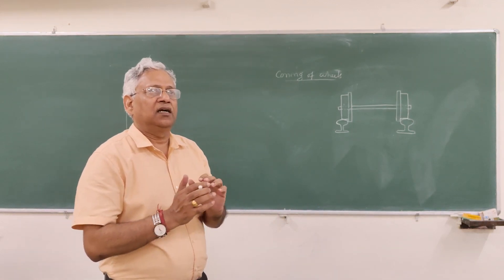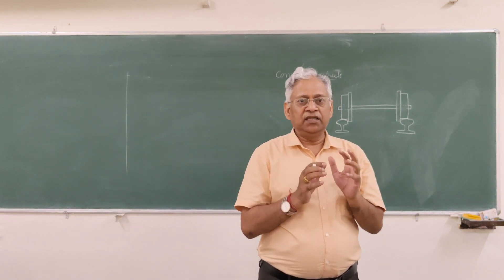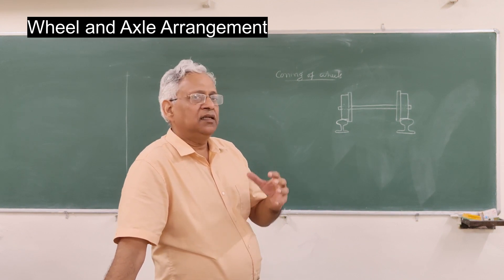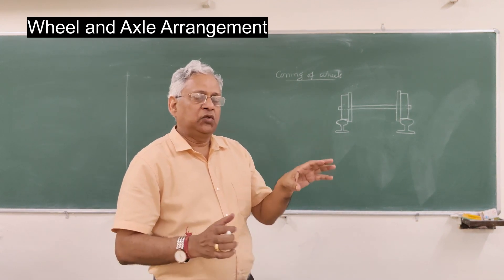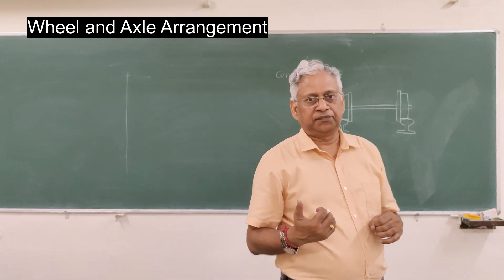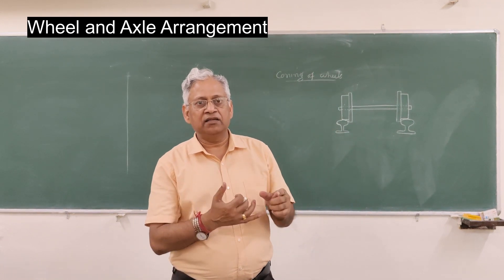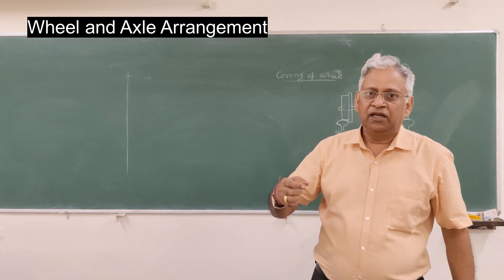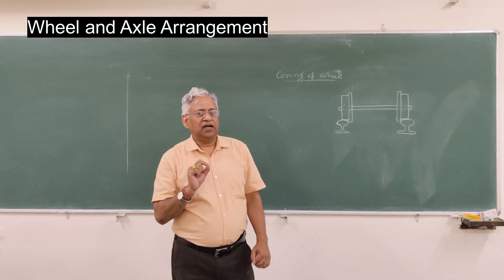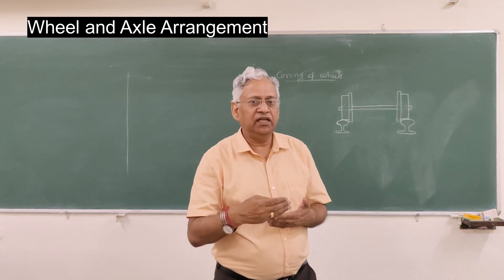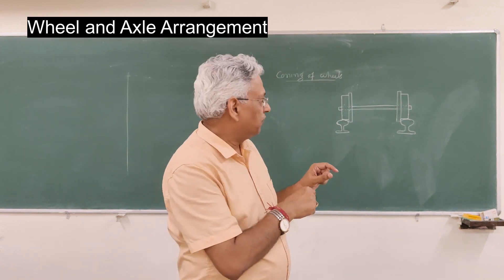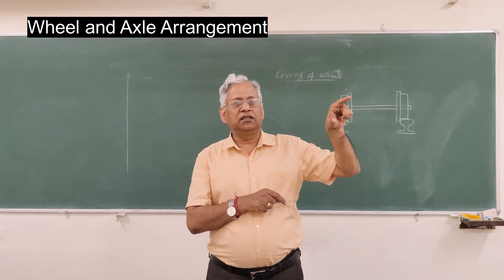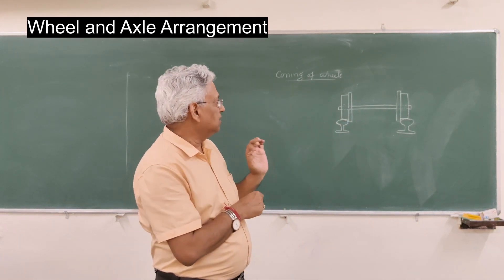Today we will discuss conning of wheels in railways. First, about the wheel and axle arrangement in railway rolling stock — there is a difference between road vehicles and railway rolling stock. In a road vehicle like a car, truck, or bus, the wheel rotates but the axle remains stationary, achieved through a ball and bearing system. But in railways, wheels are rigidly secured to the axle, and therefore when the wheel rotates, the axle also rotates. This is done for a specific purpose.